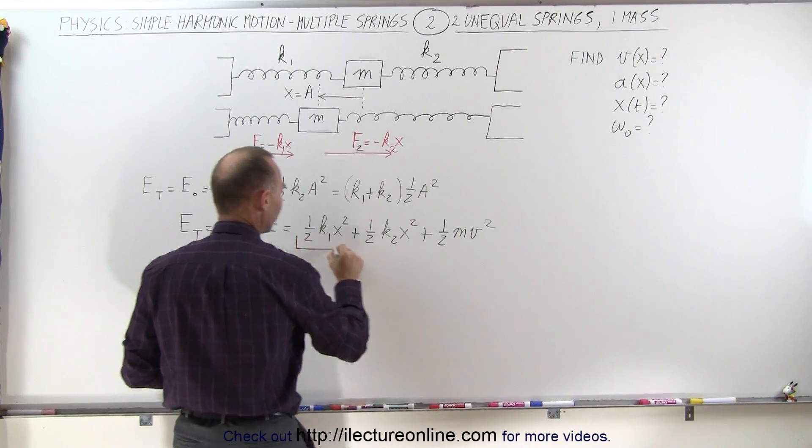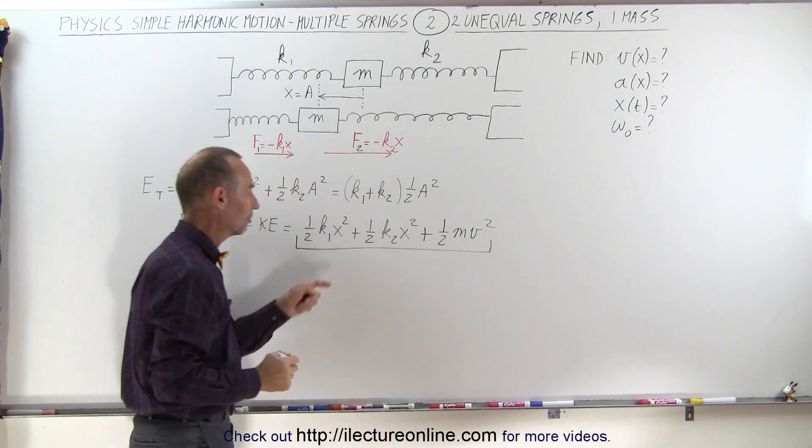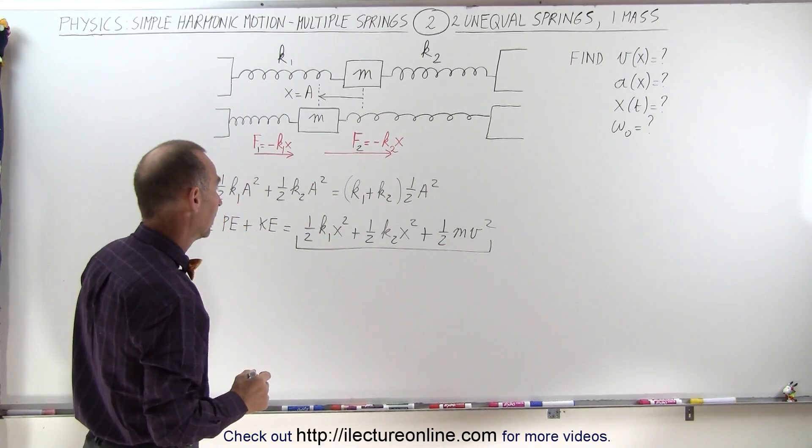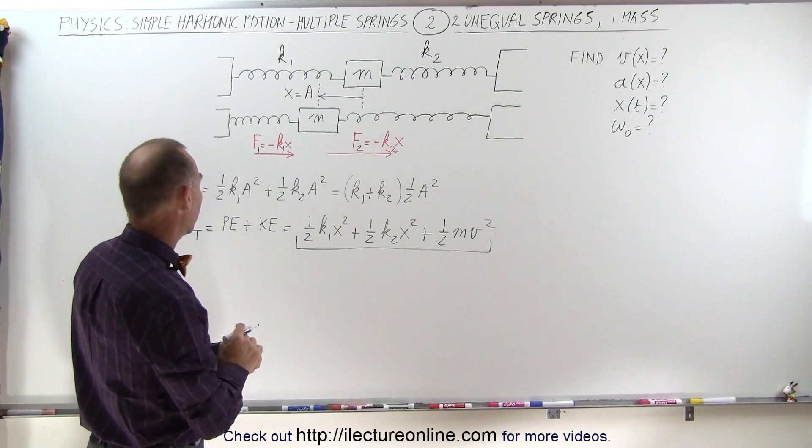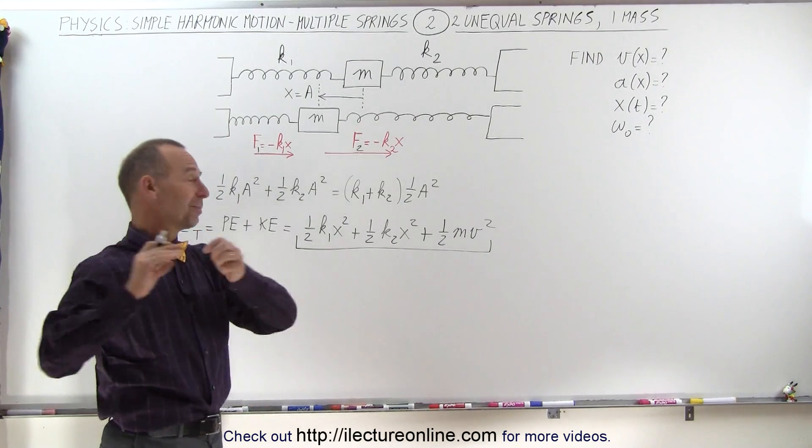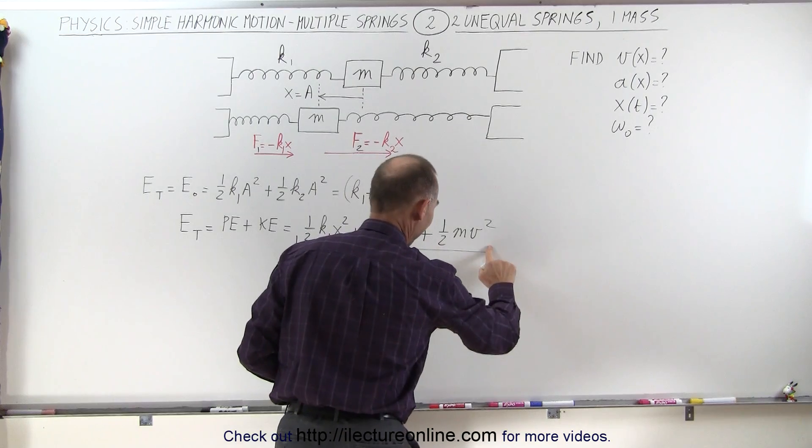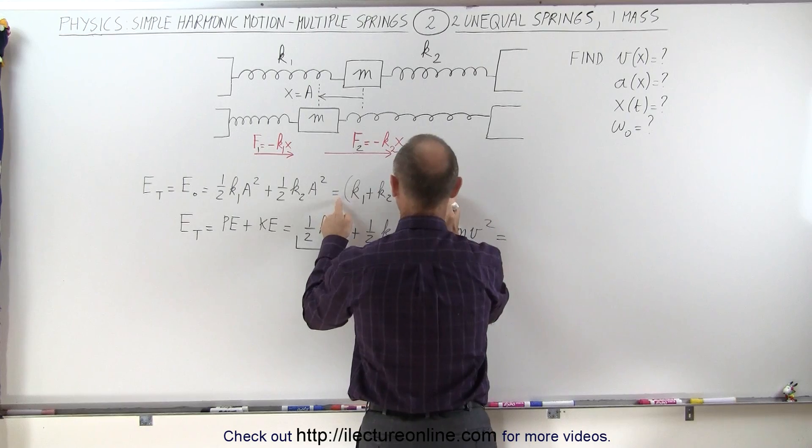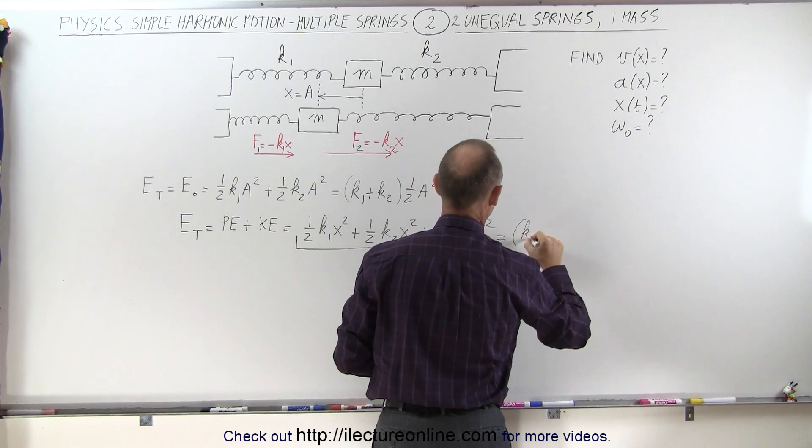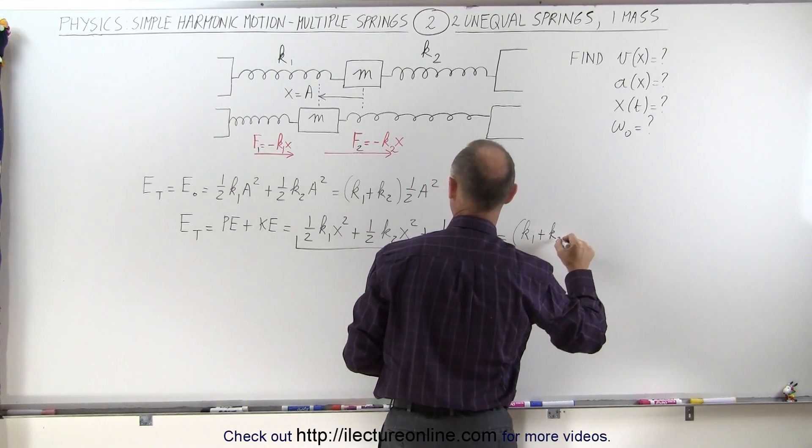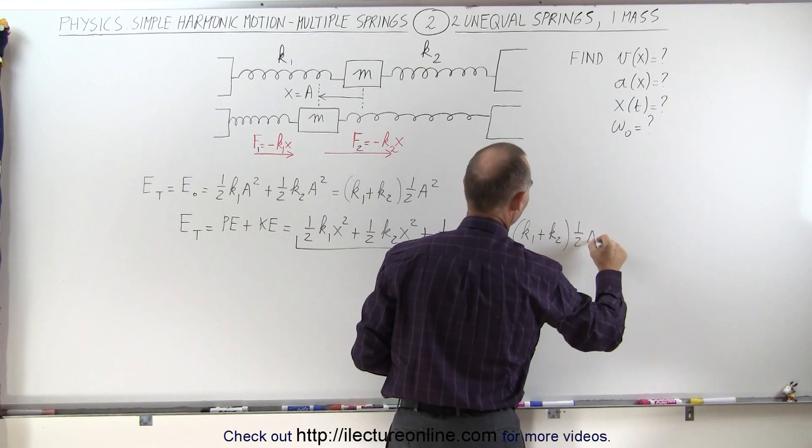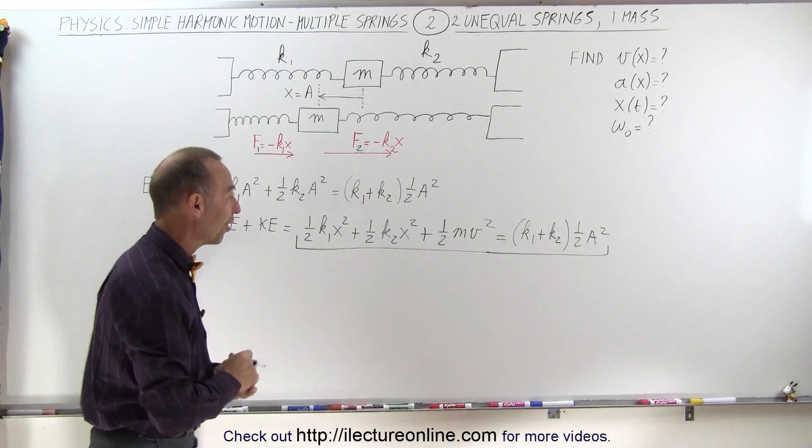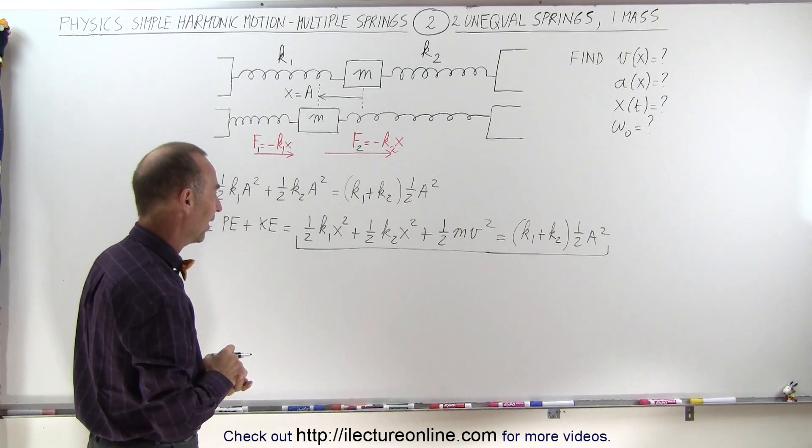And so what we're going to do now is take this part of the equation and solve that equation for v as a function of x. Oh, wait a minute. That's not an equation. I'm not done yet. I've got a little ahead of myself. That's the total energy of the system, and we're going to set that equal to the initial energy, which is right here, which is k1 plus k2 times one-half a squared. There we go. That's the equation I'm thinking about. That's the equation we're going to solve for v as a function of x.